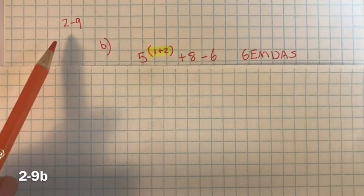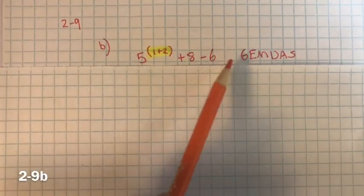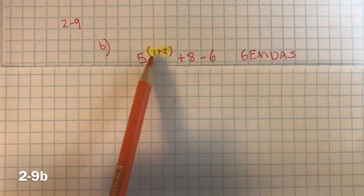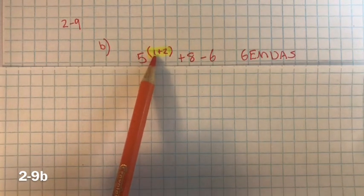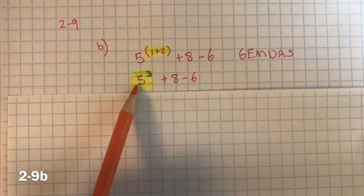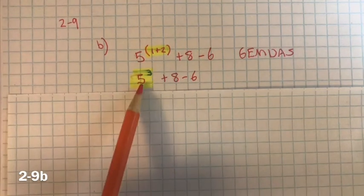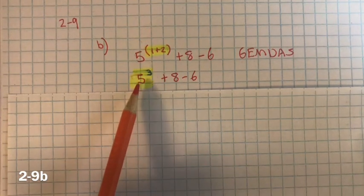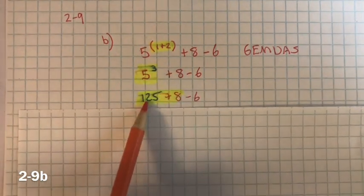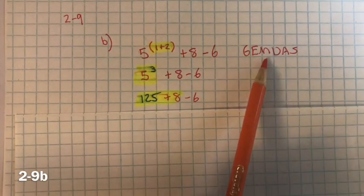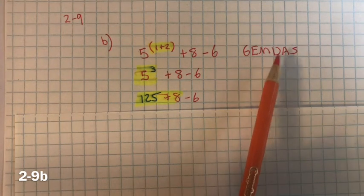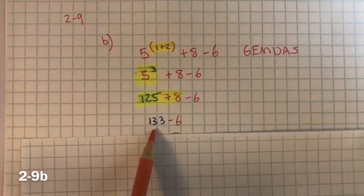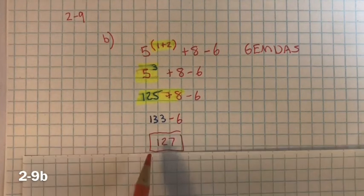Problem 2-9B. Following order of operations GEMDAS — we have grouping symbols, these parentheses, so simplify what's inside first: 1 plus 2 equals 3. Now exponents: 5 to the third power is 5 times 5 times 5 — which is 125. No multiplication or division, so addition and subtraction from left to right: 125 plus 8 is 133, minus 6 equals 127.